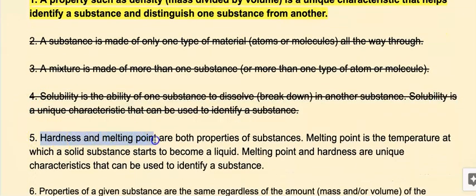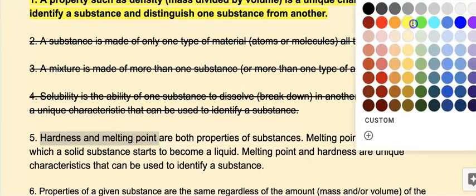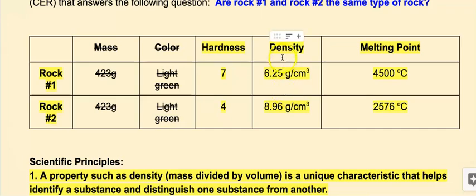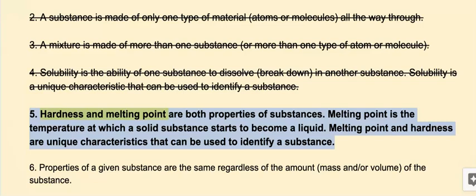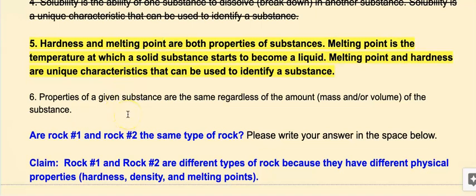Hardness and melting point — those look like key points. If I look above, we have melting point and hardness listed, so that is a keeper. It talks about both of those, so I'm going to highlight and bold it. Number six: properties of a given substance are the same regardless of the amount, mass, and/or volume of the substance. This one is one that you can use if you want to — if you use it properly it won't hurt you, but you don't necessarily have to.